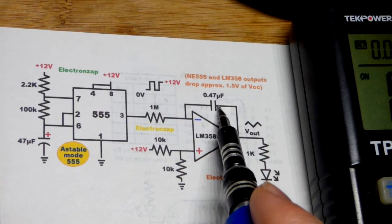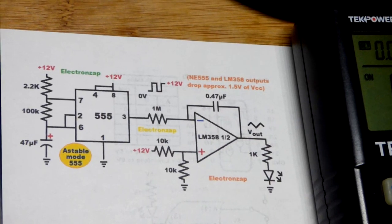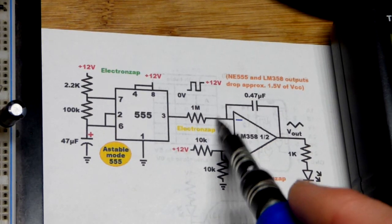That happens because we have negative feedback through a capacitor, 0.47 microfarad right there. Our reference voltage is half of the supply voltage right there.